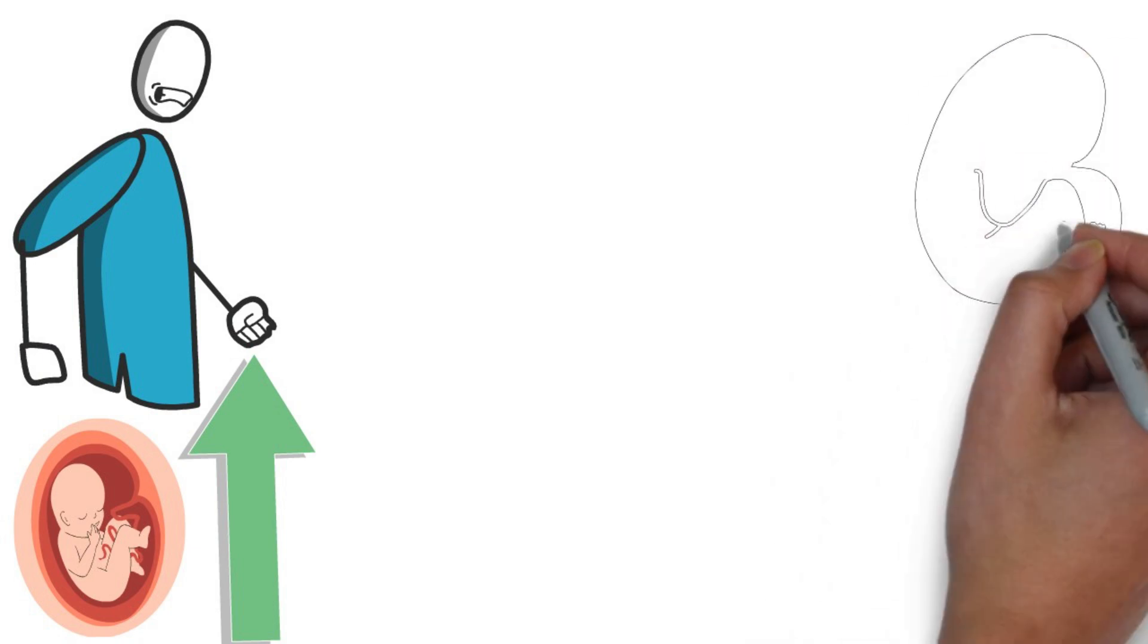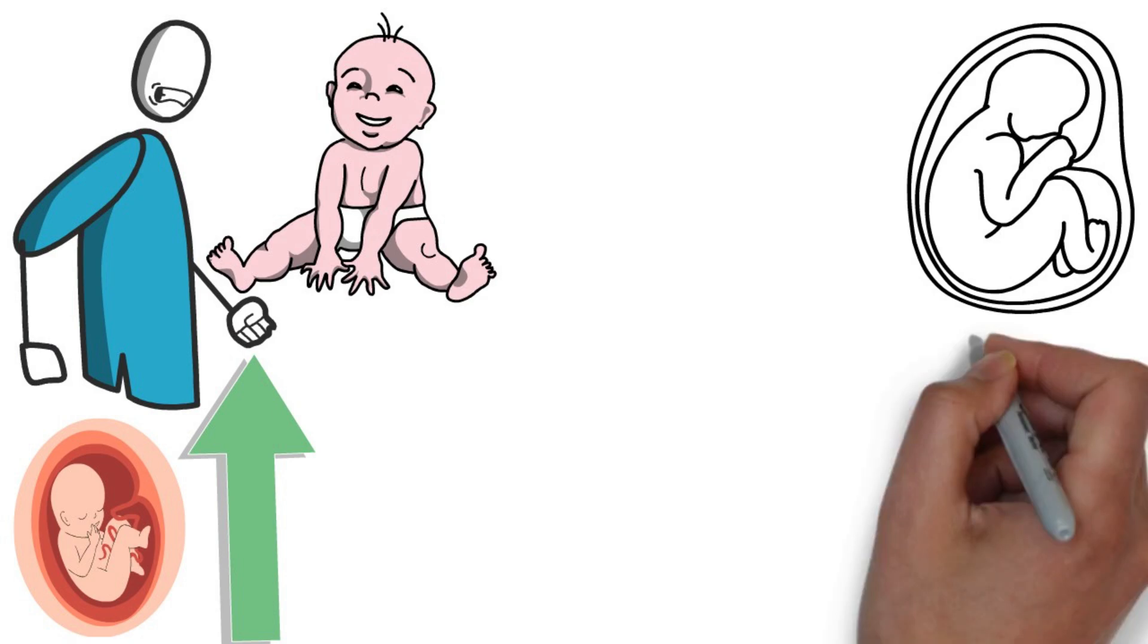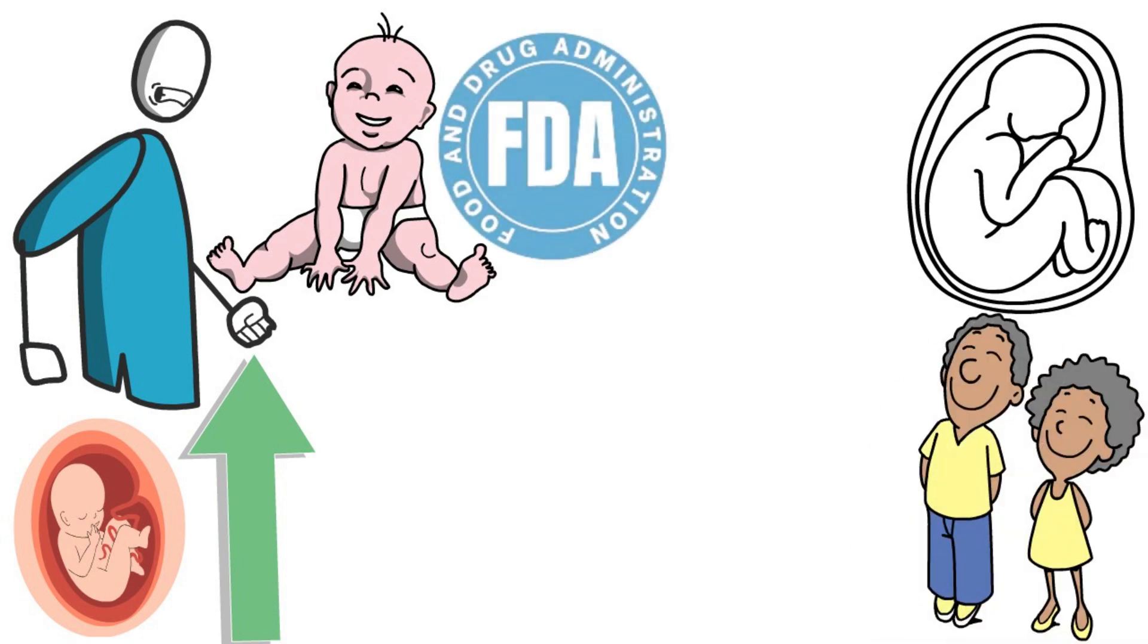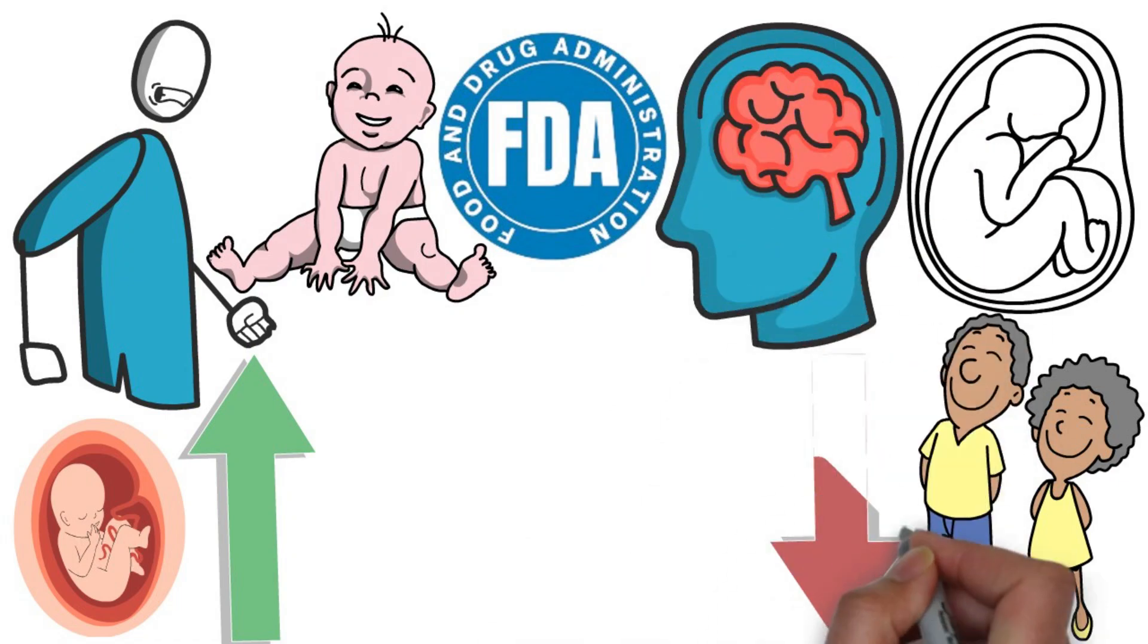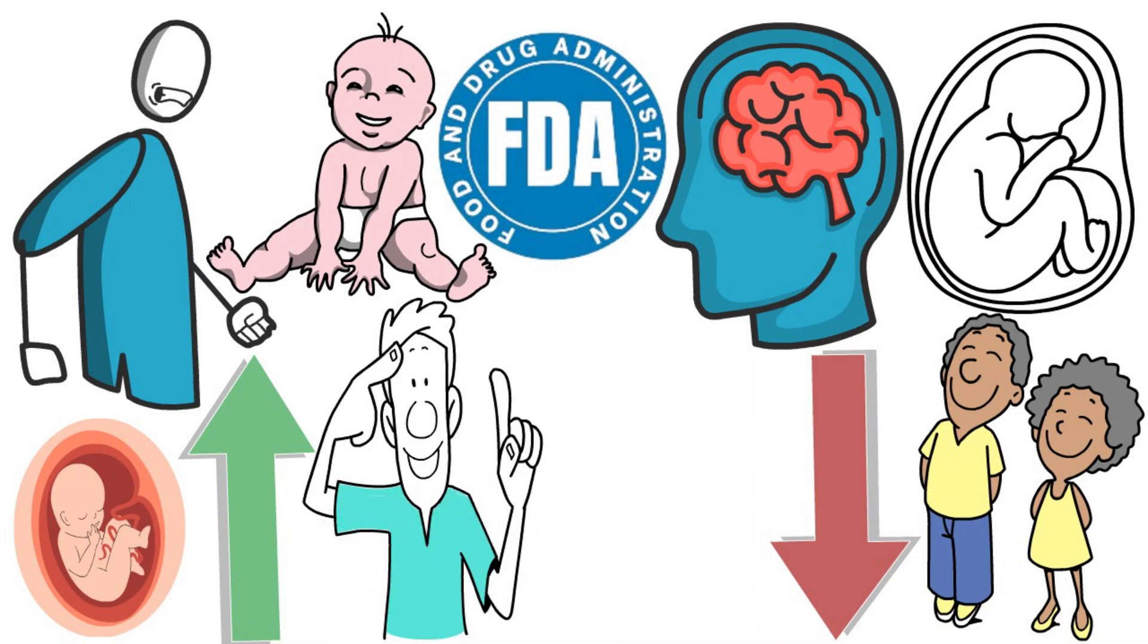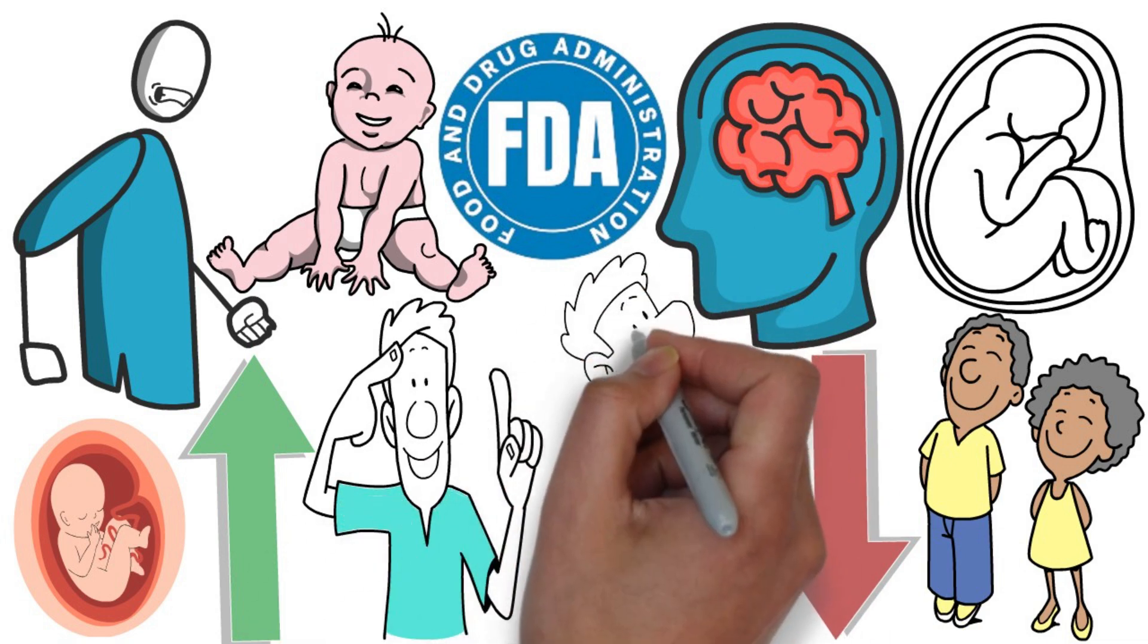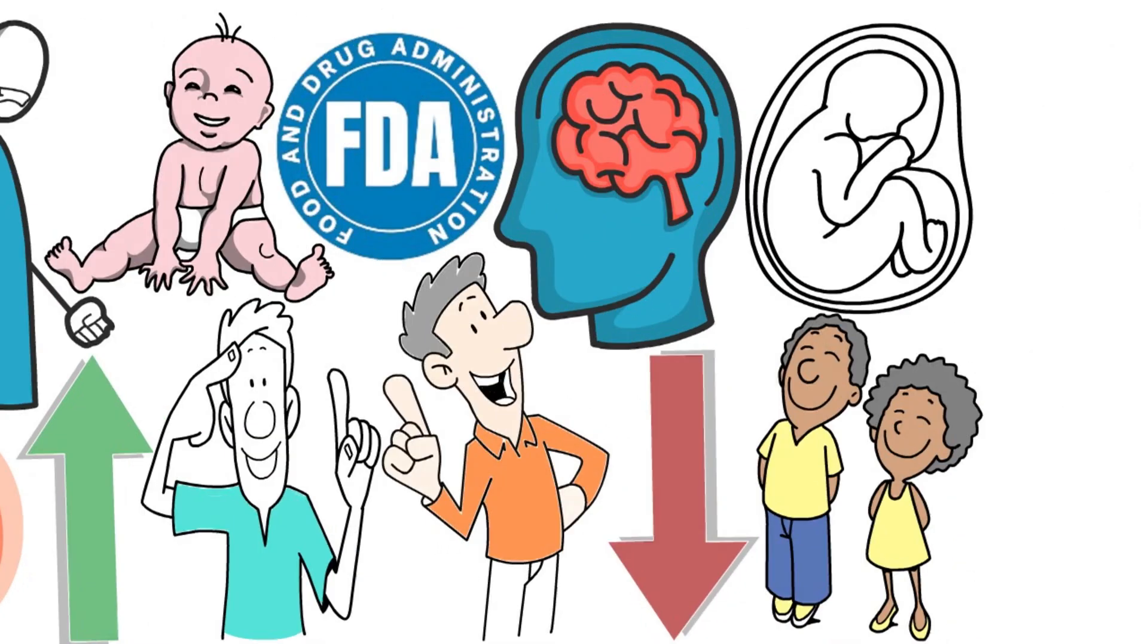BPA exposure is particularly concerning for pregnant women, infants, and young children. The FDA has expressed concern over its effects on the brain and behavior. To minimize exposure, switch to reusable metal or glass containers. Not only are these materials safer, but they're also more durable and environmentally friendly.